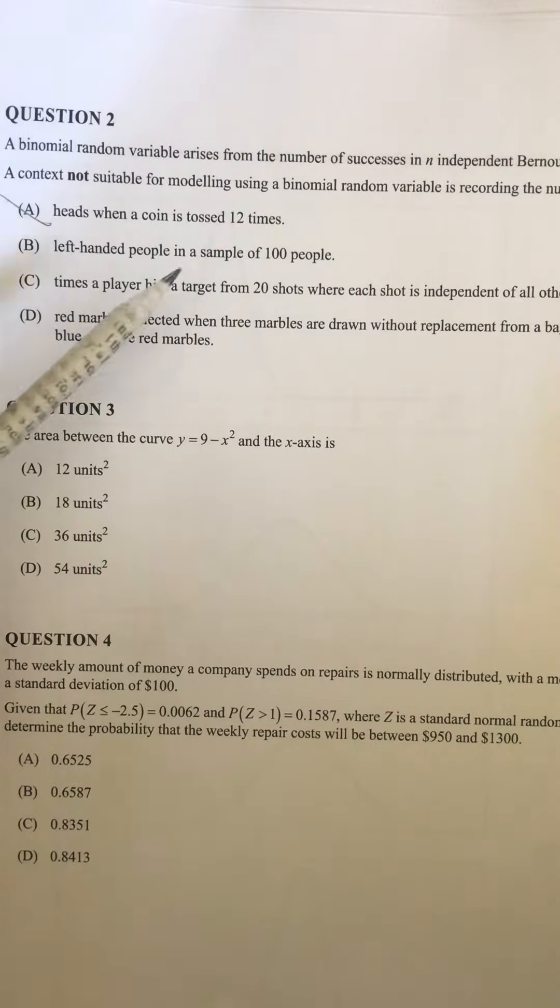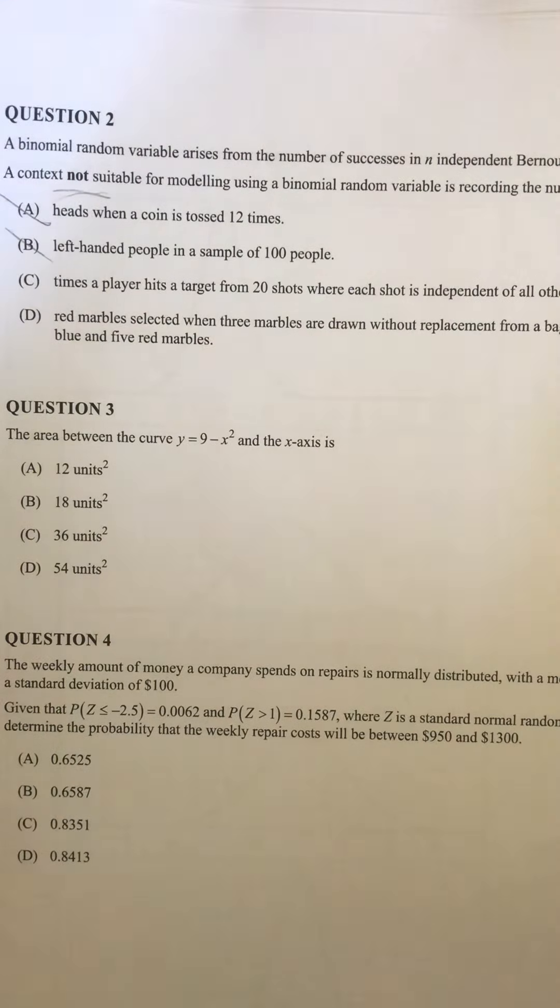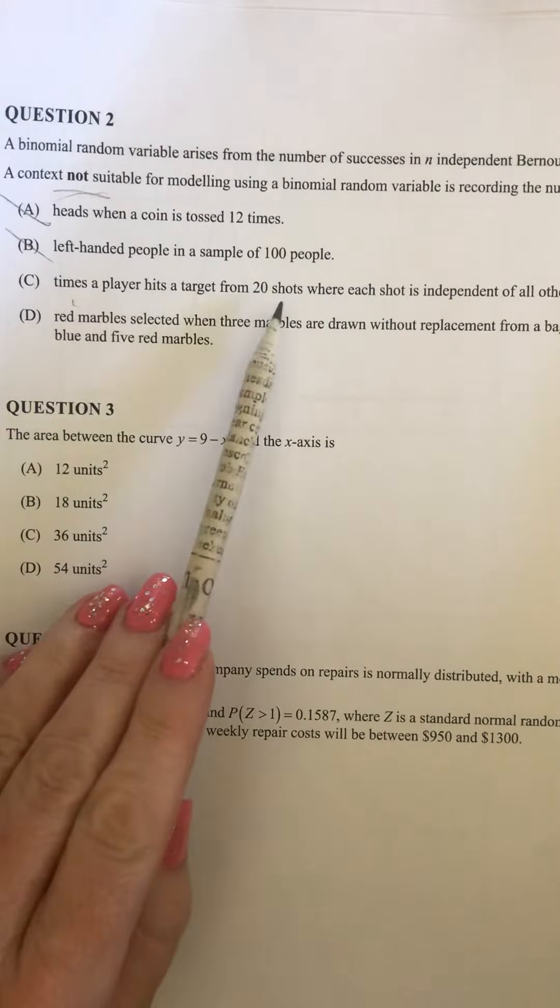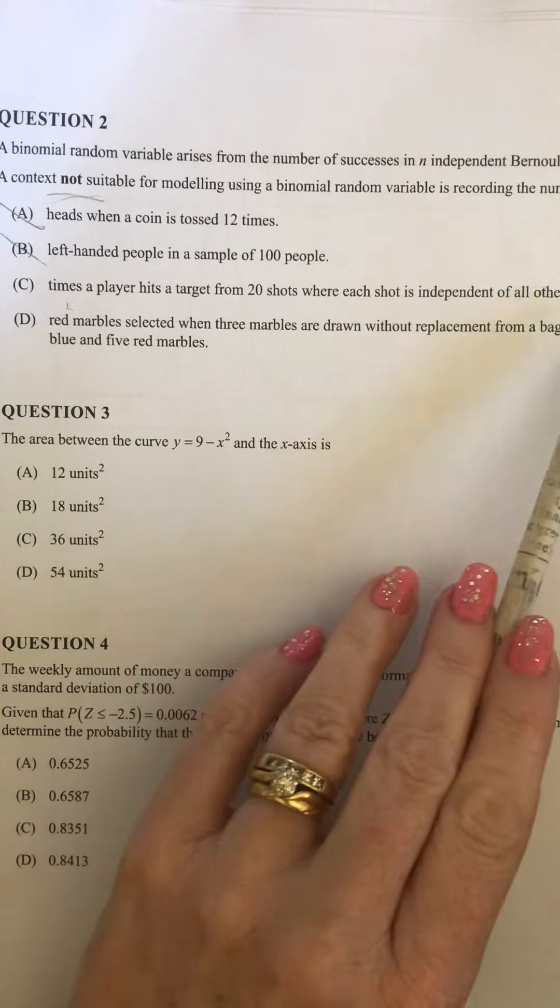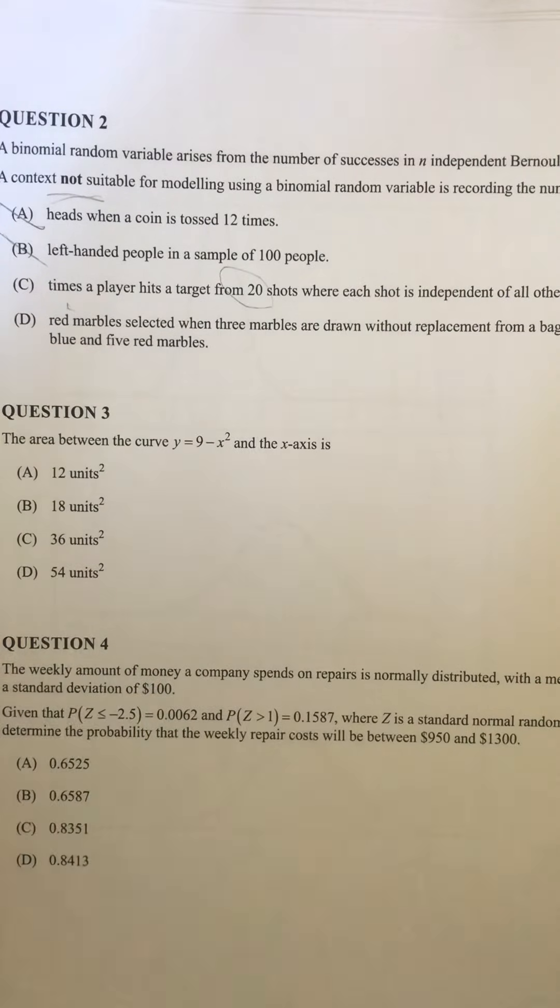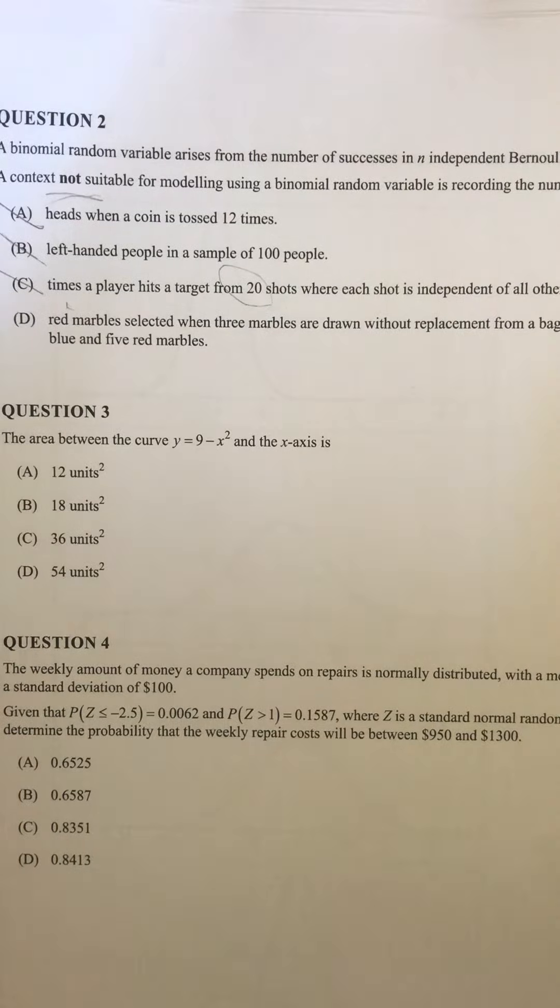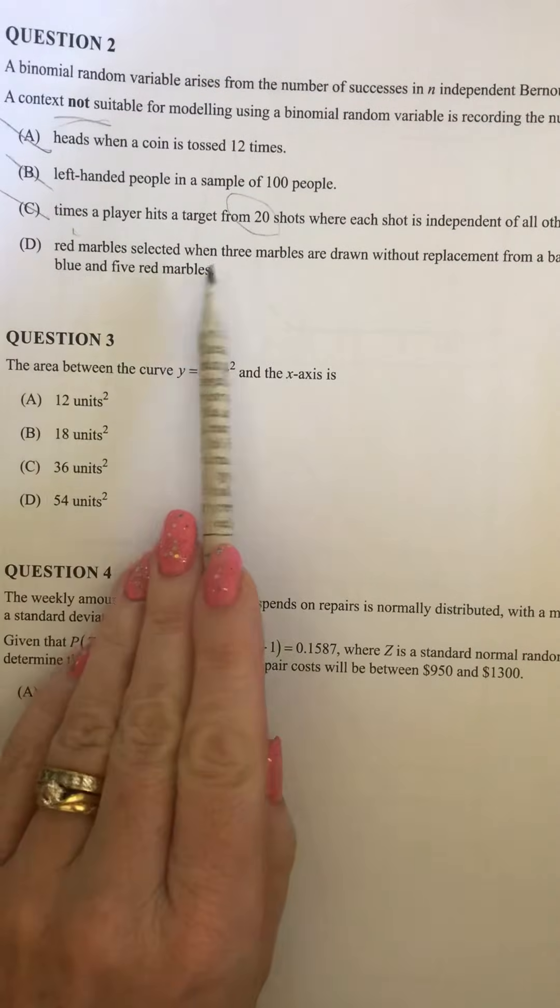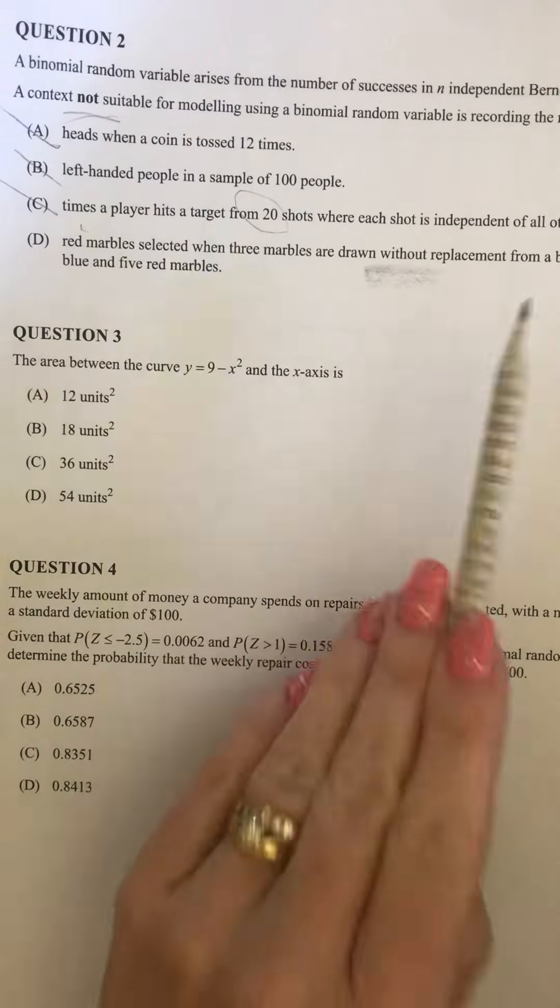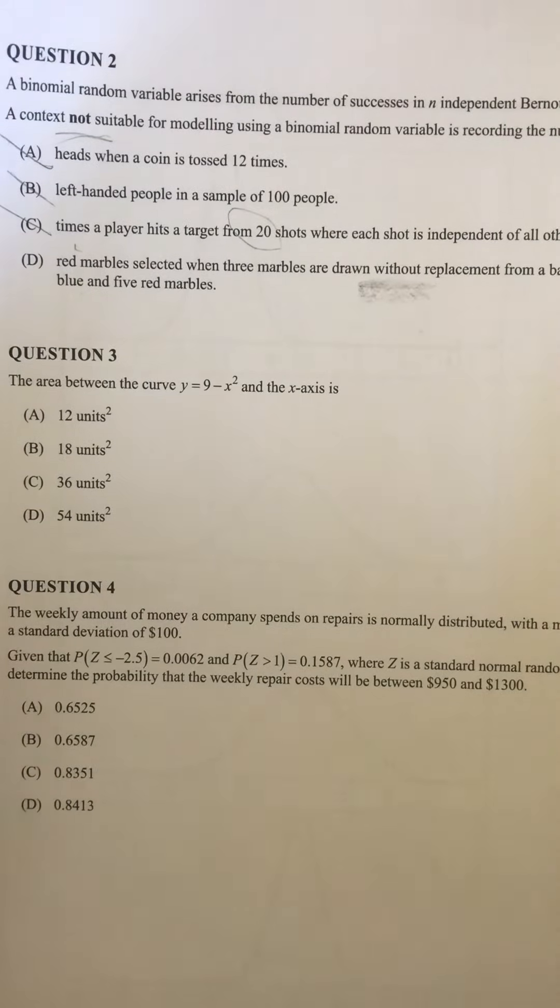Then we've got left-handed people in a sample of 100 people. So we would be assuming left-handed is success, and the number of trials is 100, and the probability would remain the same throughout. So that one's suitable as well. Then we've got times a player hits a target from 20 shots, where each shot is independent of all other shots. So we've got an N value, we have a probability, and they're independent of each other. So that one's out. Then we've got red marbles selected when three marbles are drawn without replacement. So that's our key factor there. As soon as we're saying without replacement, that means the probability is going to change from one trial to the next. So our answer for that one is going to be D.